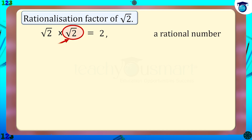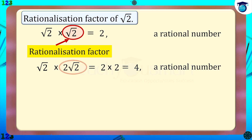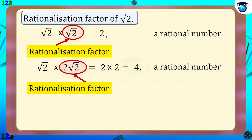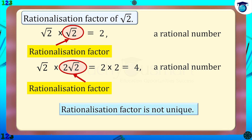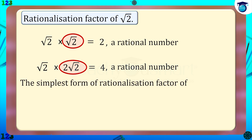Therefore, √2 is a rationalization factor of √2. Again, if we multiply √2 by 2√2, that is √2 multiplied by 2√2 equals 2 multiplied by 2, we get 4, which is also a rational number. Therefore 2√2 is also a rationalization factor of √2. Similarly, there are many rationalization factors for √2 — the rationalization factor is not unique — but we use the simplest form in simplification. So the simplest form of the rationalization factor of √2 is √2 itself.